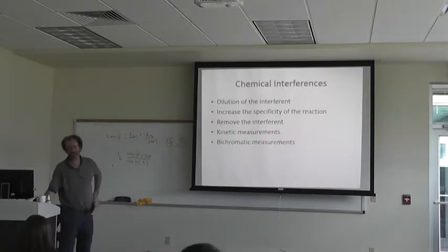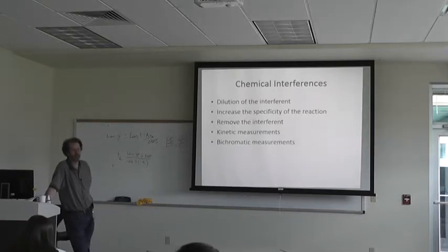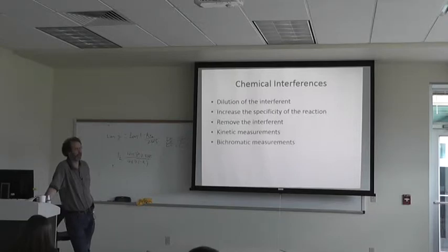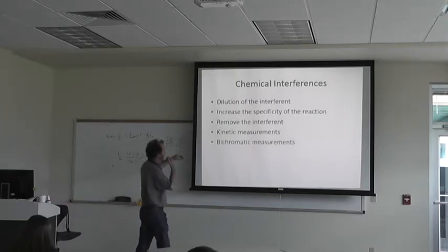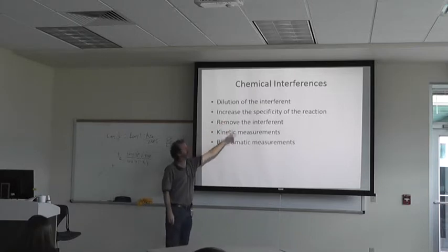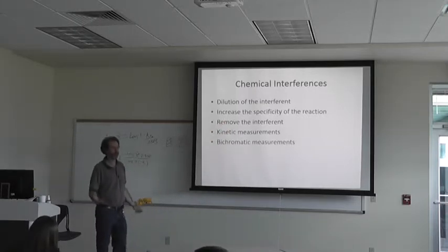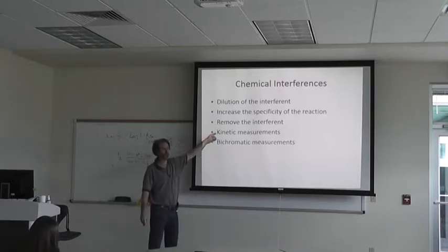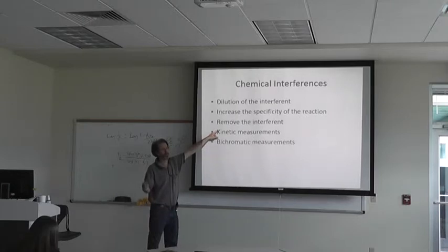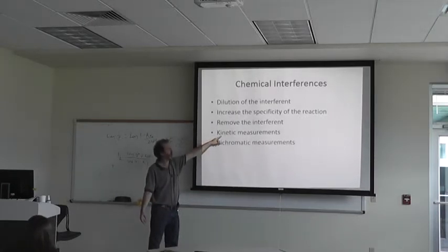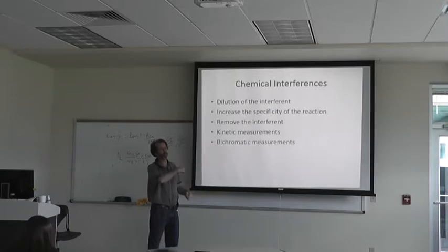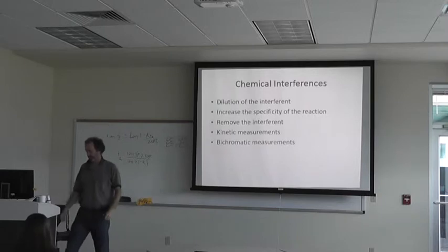Chemical interferences: you can dilute the interference, but then you're also diluting your sample and the analyte you're interested in, so you might lose sensitivity. You can increase the specificity of the reaction by switching to better antibodies, a better column, or better stationary phase. You can remove the interference via extractions. Or you can do kinetic measurements or bichromatic measurements rather than single time-point measurements.